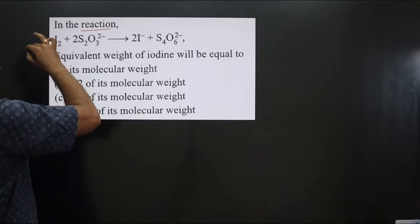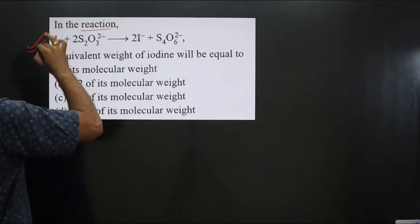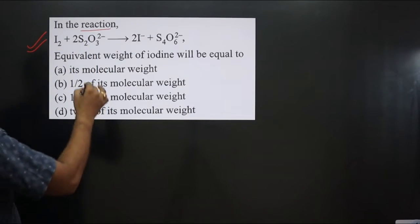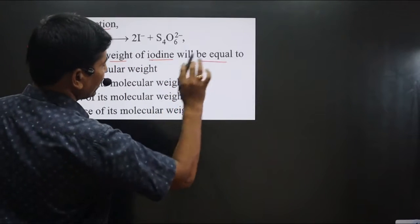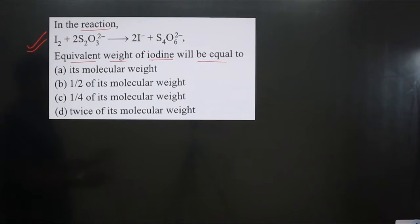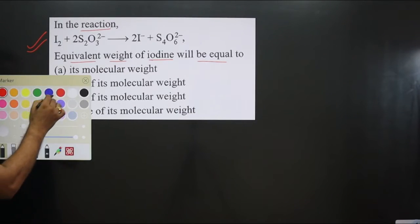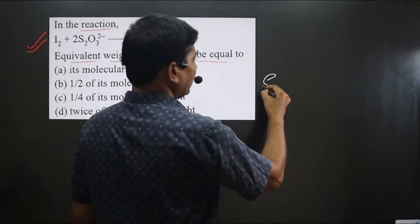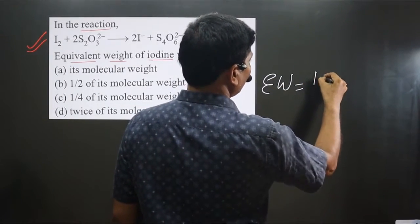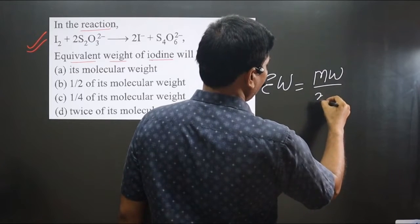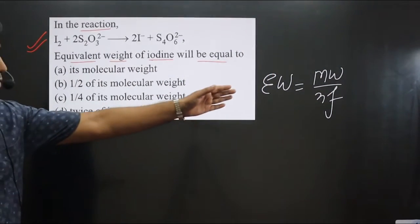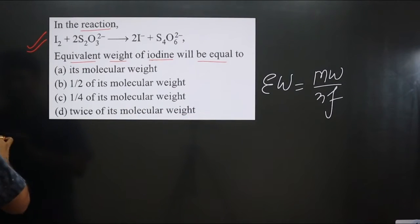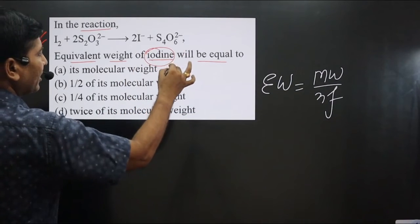The question gives a chemical reaction and asks for the equivalent weight of iodine (I₂). To solve this, we use the formula: equivalent weight = molecular weight divided by n-factor. So if we can calculate the n-factor value for iodine (I₂), we can answer the question.